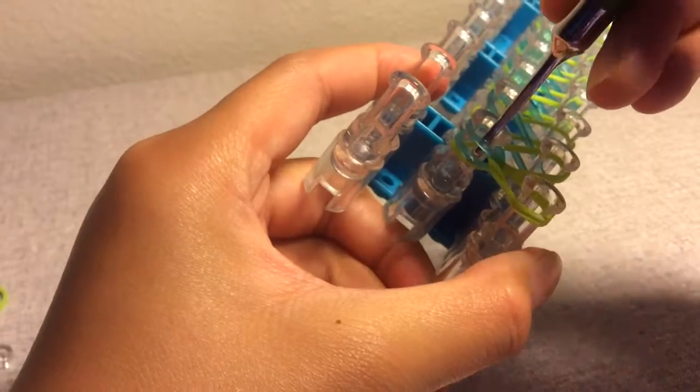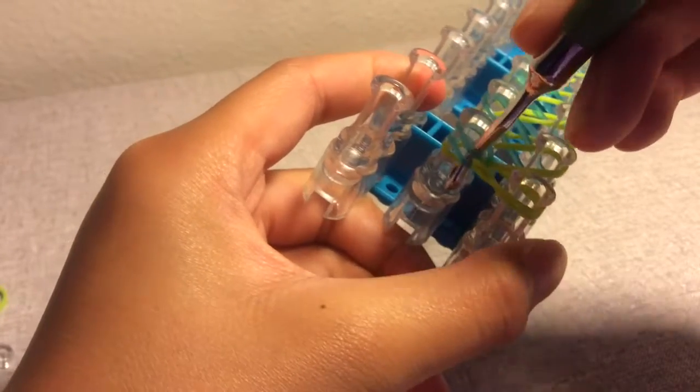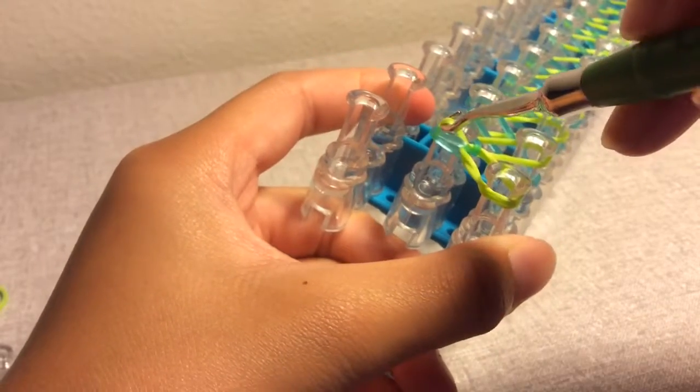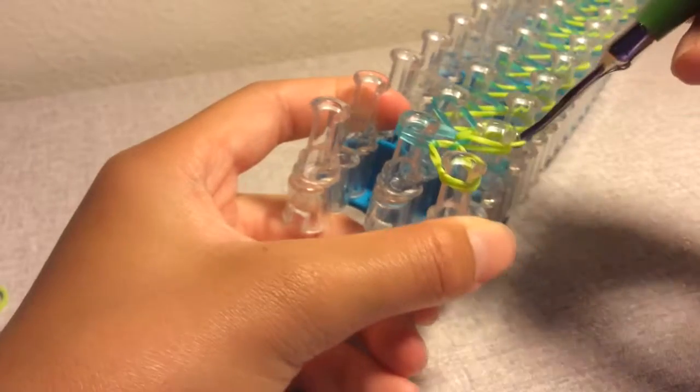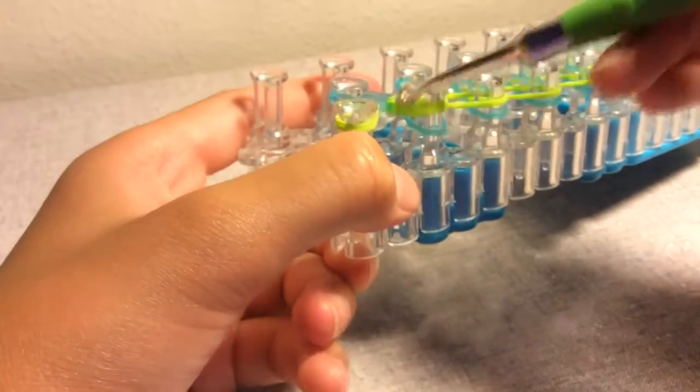So now you want to push back the two blue bands and bring up the bottom band, which for me is green, and loom it right here, just like that. That is what it should look like.